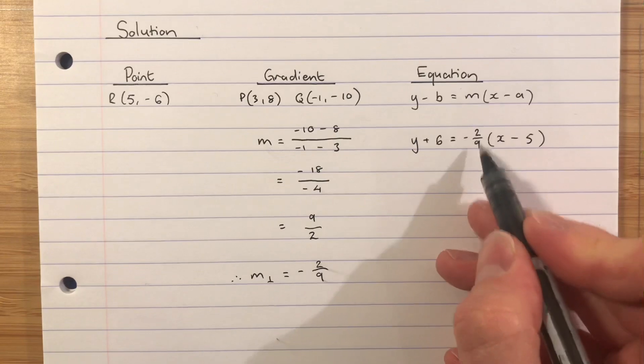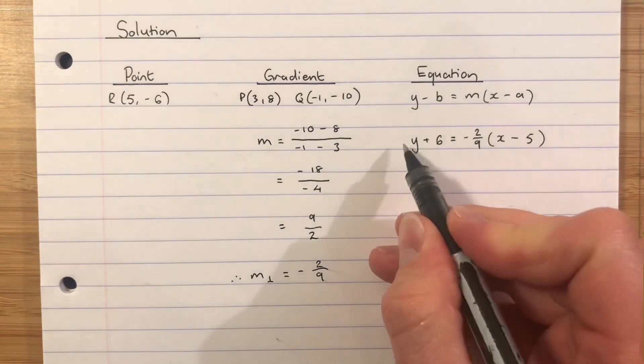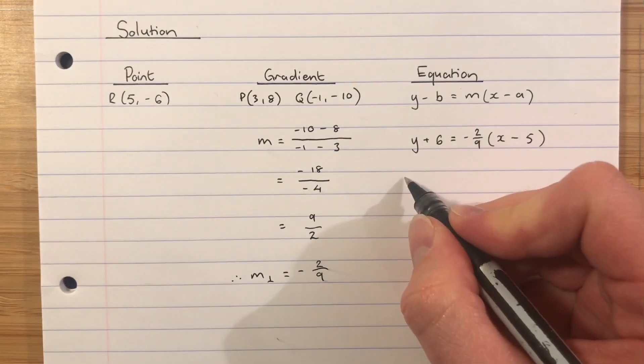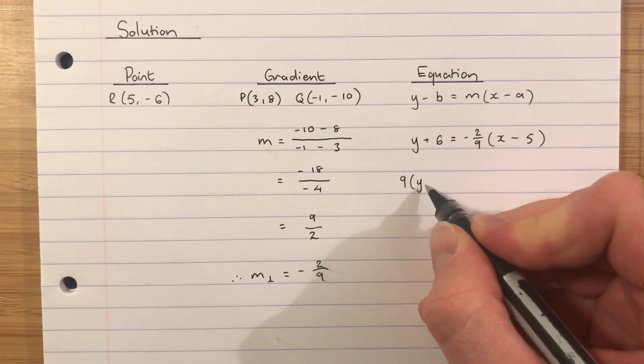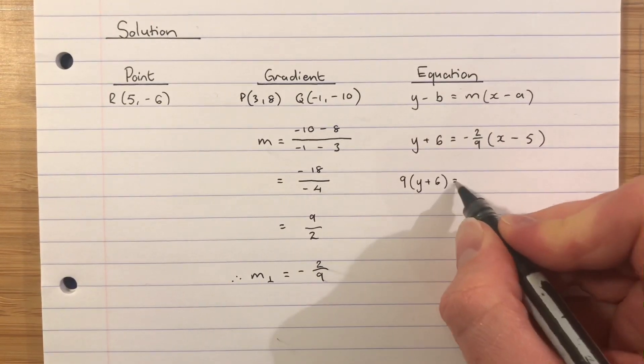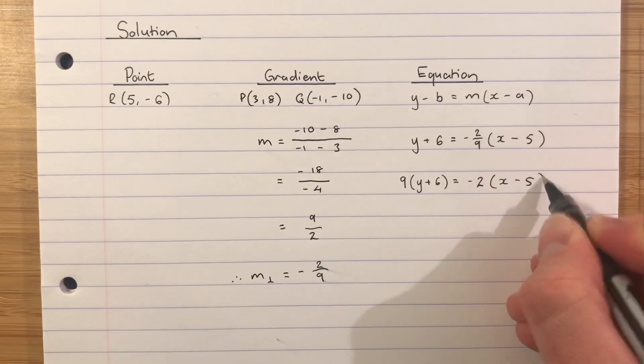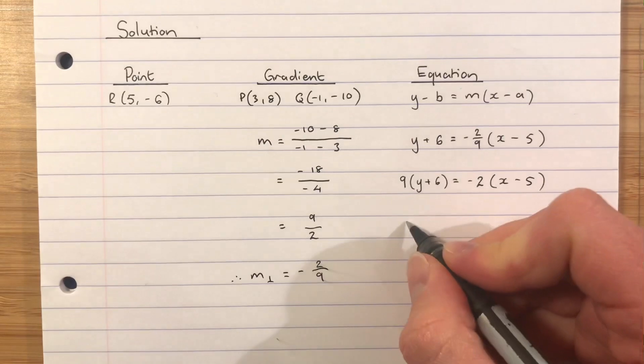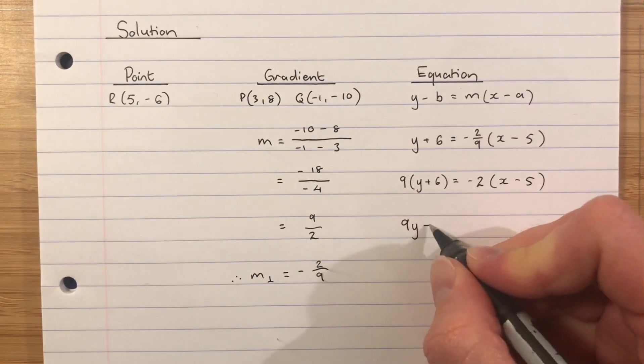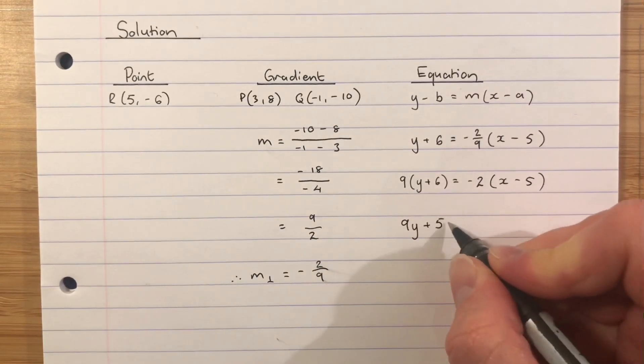We don't want to be dealing with a fraction, so we'll multiply the denominator to the other side and we will get 9 times Y add 6, and that leaves me with my negative 2 multiplying the X minus 5. Multiplying my brackets out and we'll get 9Y add 54.